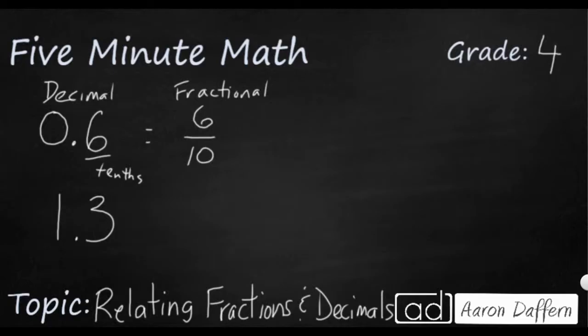Now 1.3 is going to be a little bit trickier because you see we actually have something in the ones place. So there's two different ways we can do it. The typical way would be you simply leave that as a whole number. We're going to end up making a mixed number. So this is going to be the tenths place. And so we're going to put not a three down there. Always put the place value name down there, 10, and then 1 and 3 tenths.